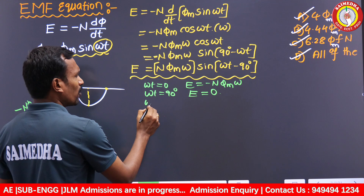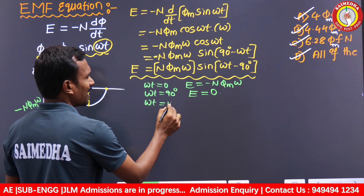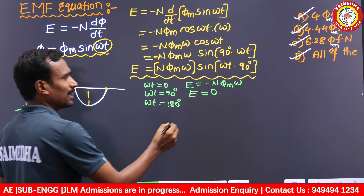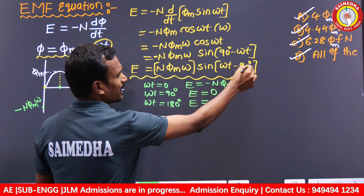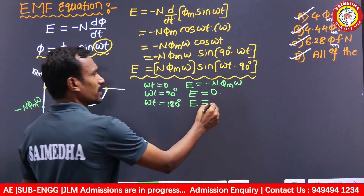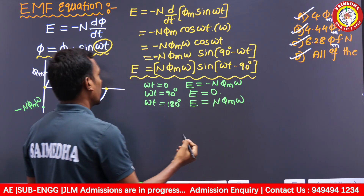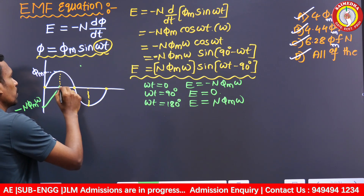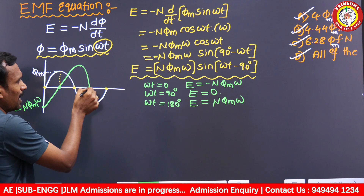When ωt = 180°, sin(180° − 90°) = sin(90°) = 1, so E = N × Φ_M × ω, which is a positive maximum value.